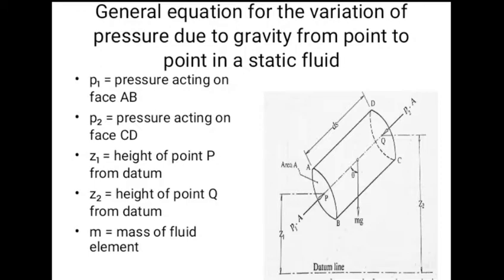Consider a cylindrical element of fluid having constant cross-sectional area A. The element is inclined at an angle theta with the vertical axis as shown in the figure. Let P1 and P2 be the pressures acting on face AB and CD. Z1 and Z2 are the heights of point P and Q from datum, and M is the mass of the fluid element.